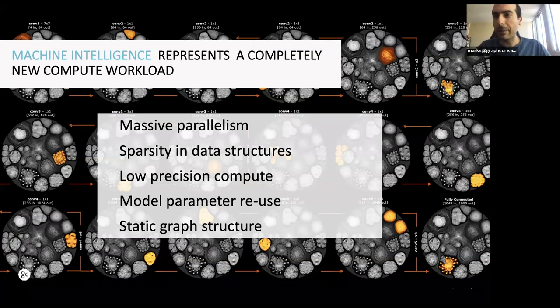Reusing model parameters and having a static graph structure is important. The idea is once you've experimented with your model enough, at inference, odds are your graph is not going to change a lot. So how can you make static graphs run really quickly? That said, we also have support for dynamic graphs with a compiler trick, and I'm happy to talk about that in more detail later.